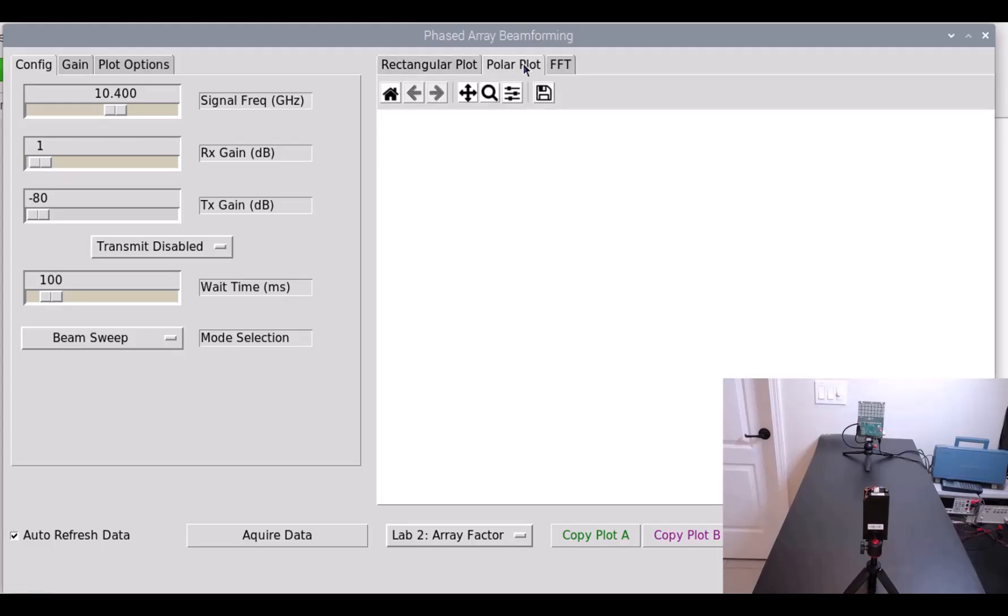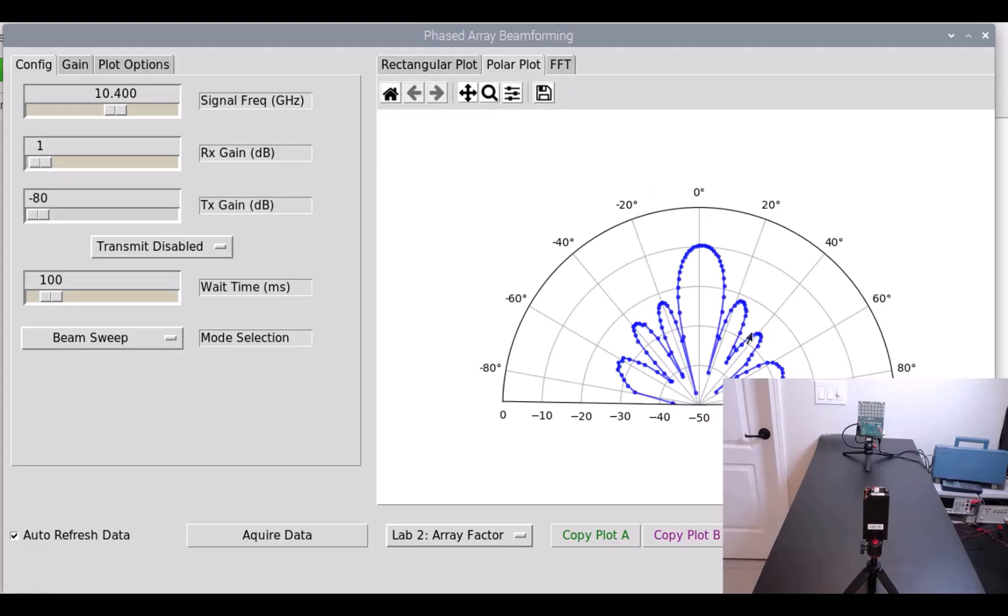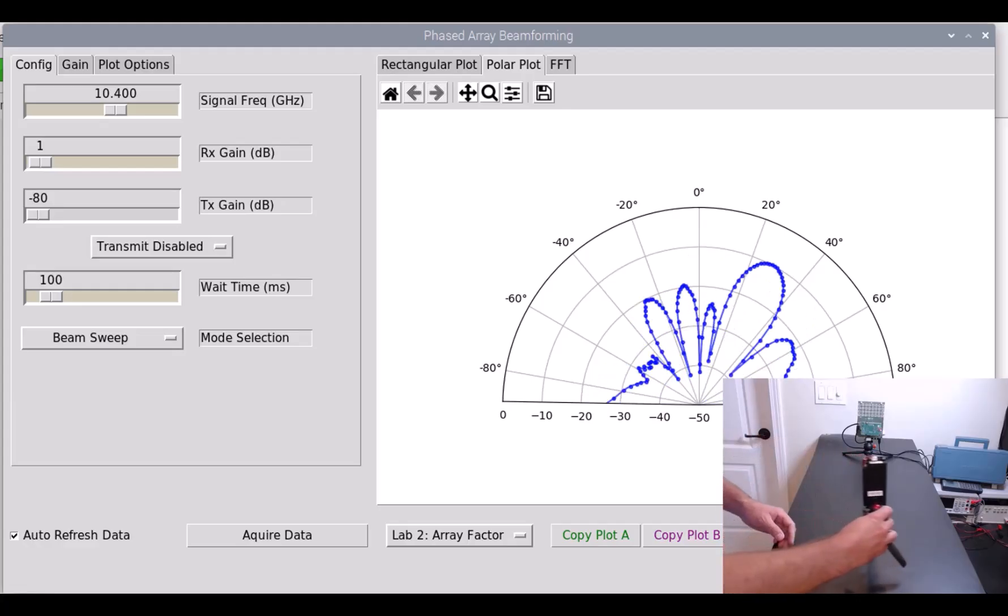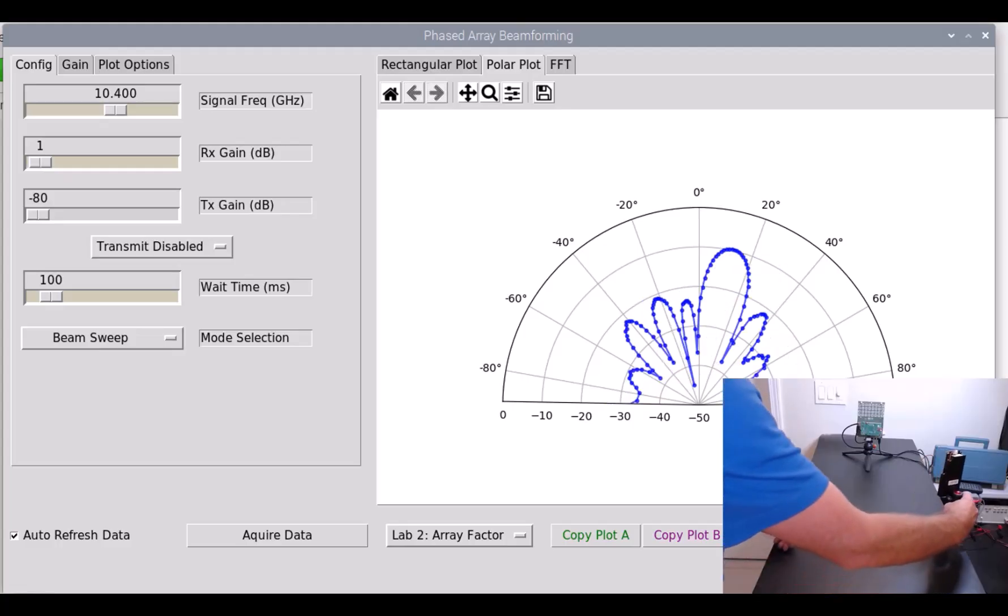And if we click on the polar plot option, this brings up a polar representation, so it's the exact same data. It's just plotted on a polar coordinate system. This is interesting. You see a lot of antenna plots like this. It kind of accentuates some features. And again, we can rotate around and we'll see the impact there.